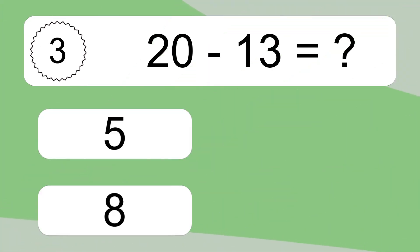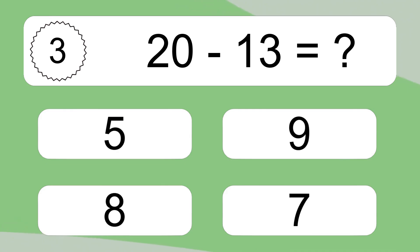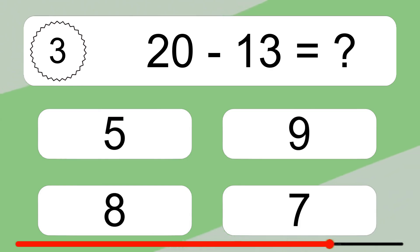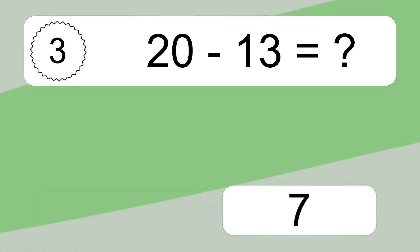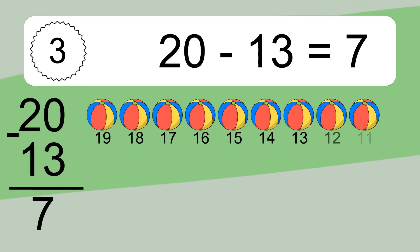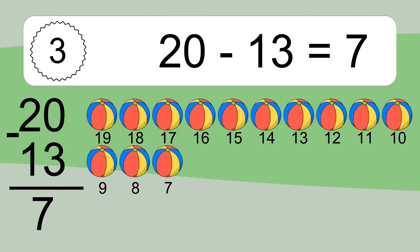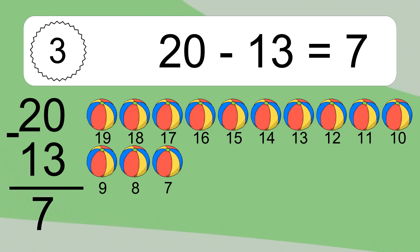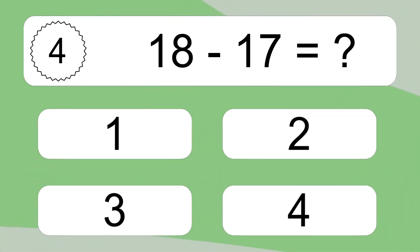20 minus 13 equals what? 20 minus 13 equals 7. Let's count it: 19, 18, 17, 16, 15, 14, 13, 12, 11, 10, 9, 8, 7.